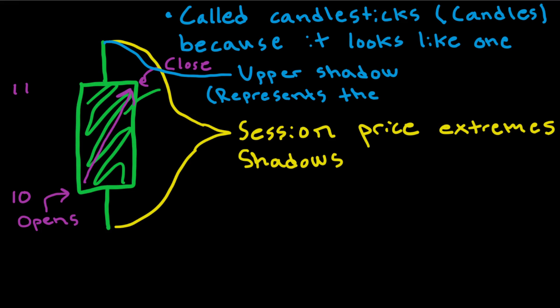And as we said, they represent the session price extremes. So the upper shadow represents the session high. The highest price of the day, the highest price of the session. So if we say that this green candle right here represents a day, within this day, the price might have reached 11.5. And this was the highest price during the session. That means that we will have an upper shadow, a shadow above the real body, that goes up to 11.5.